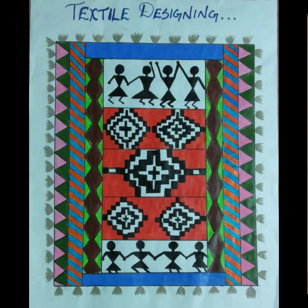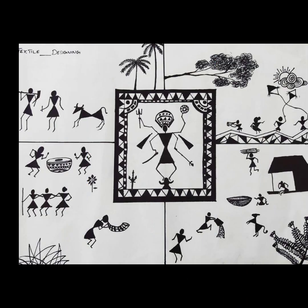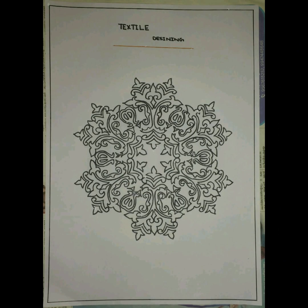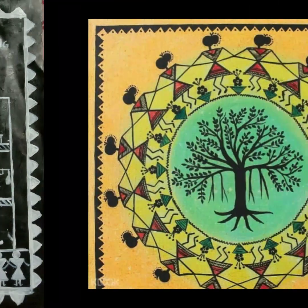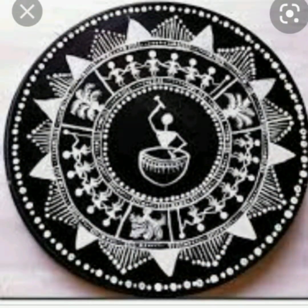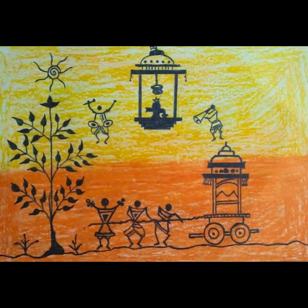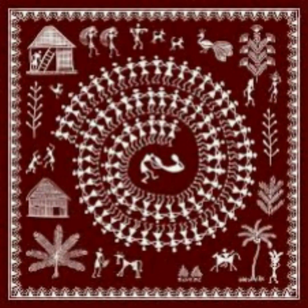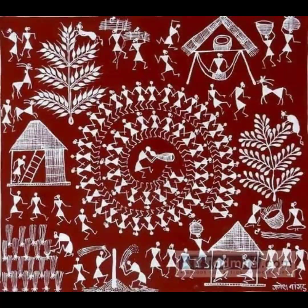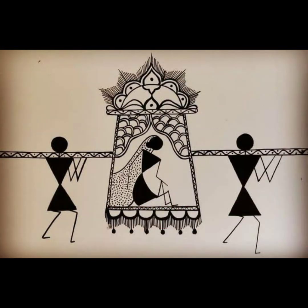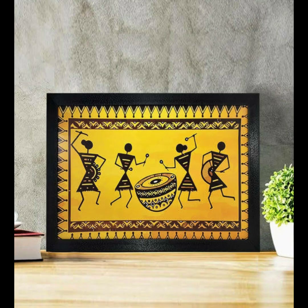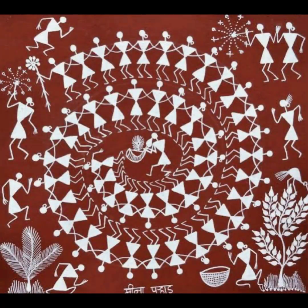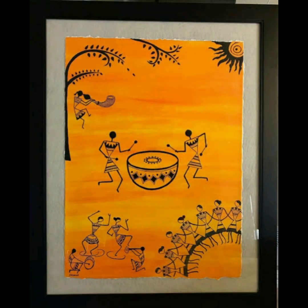The style of Warli paintings was not recognized until the 1970s, though it dates as early as the 10th century. The Warli culture is centered on the concept of Mother Nature and elements of nature, which are a focal point displayed in Warli paintings. Farming is the main way of life and a large source of food for the tribe. They greatly respect nature and wildlife for the resources they provide. Warli artists use their clay huts as the backdrop for their paintings.